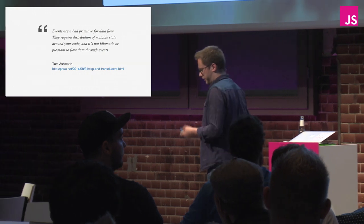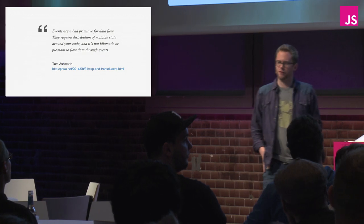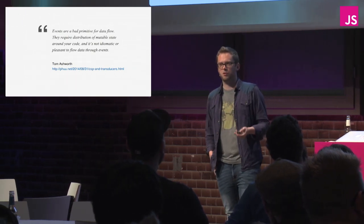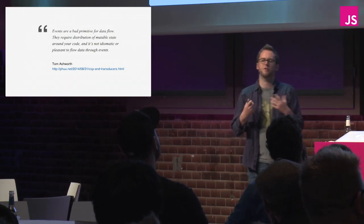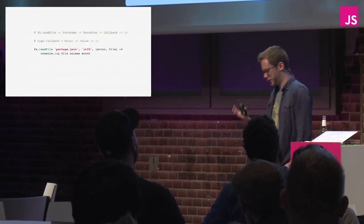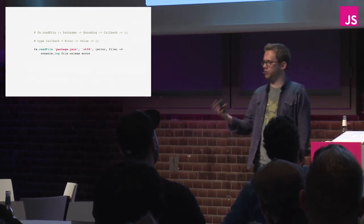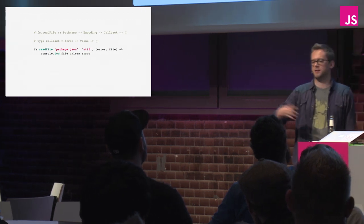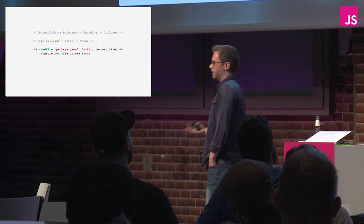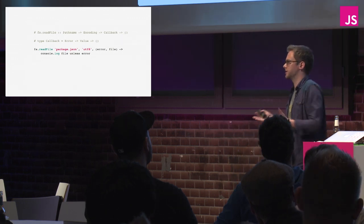Tom Ashworth wrote an essay arguing that events are a bad primitive for data flow — they require distribution of mutable state and it's not pleasant to flow data through them. We can use types to understand why. Consider Node's fs.readFile: it takes a path, encoding, and callback and returns nothing. A function that returns nothing must have side effects — if it has no return value and no side effects, why are you calling it? So even just reading a file, we work with deeply side-effectful functions.